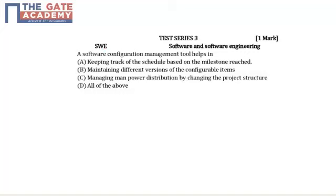This question is from software engineering. The question is: a software configuration management tool helps in which of the following? Option A is keeping track of the schedule based on the milestone reached — this is a part of software configuration management, so option A is correct. Maintaining different versions of the configurable items is also part of it, so option B is also correct.